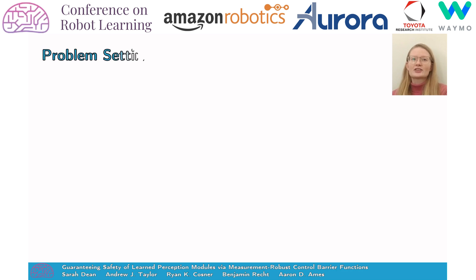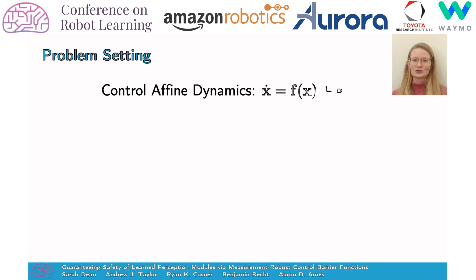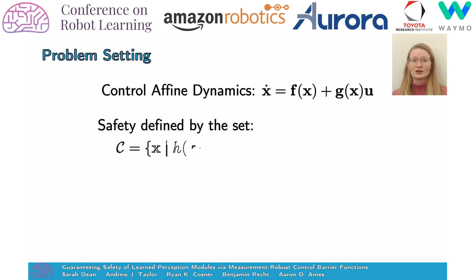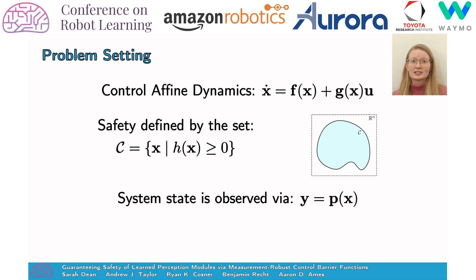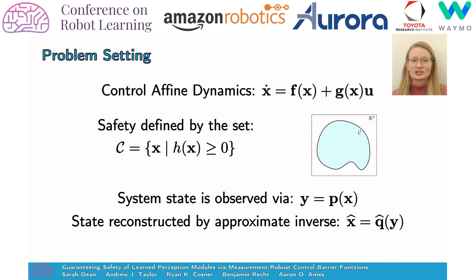We consider the setting of a nonlinear system with control affine dynamics. We further suppose that safety is encoded via a set in state space, defined as a zero superlevel set of some function H. Our goal is to ensure that the system remains within this set. Finally, we suppose that the system's state is observed through some complex and potentially high-dimensional function, and that an approximate inverse function is known or has been learned from data. We call this the perception module.